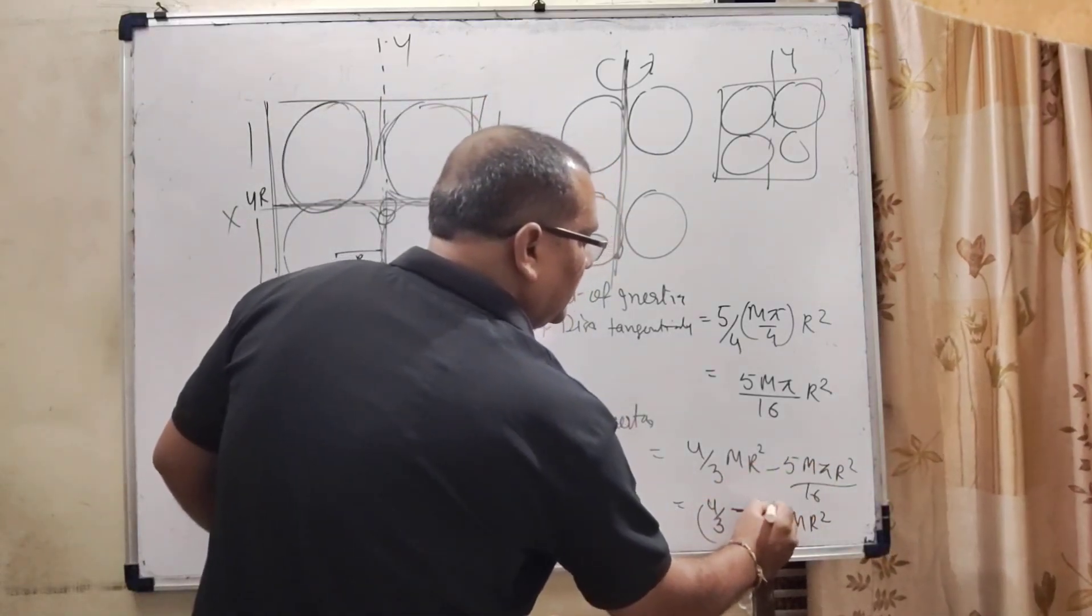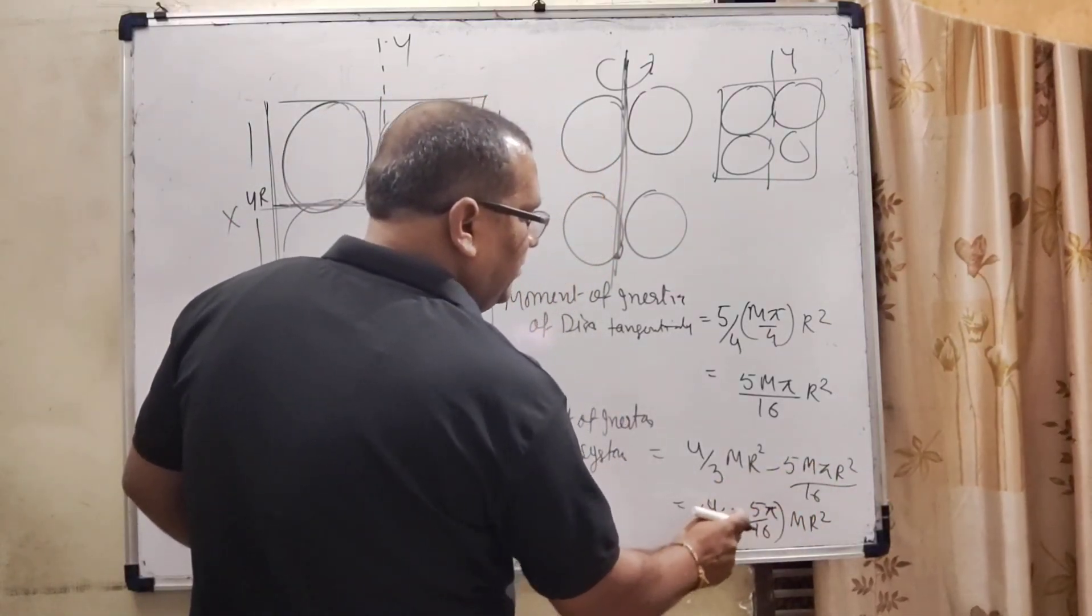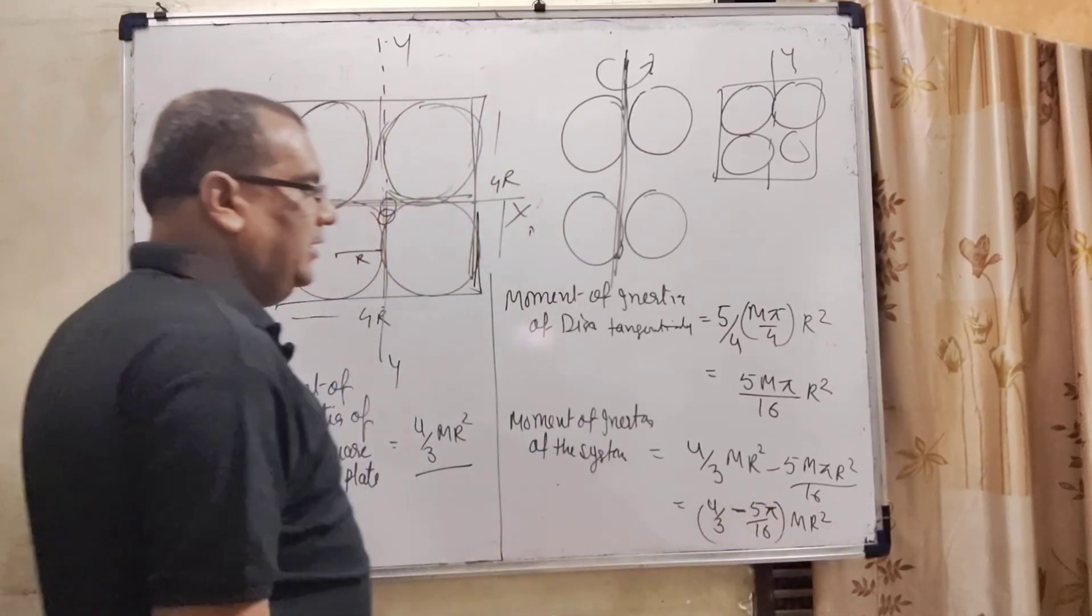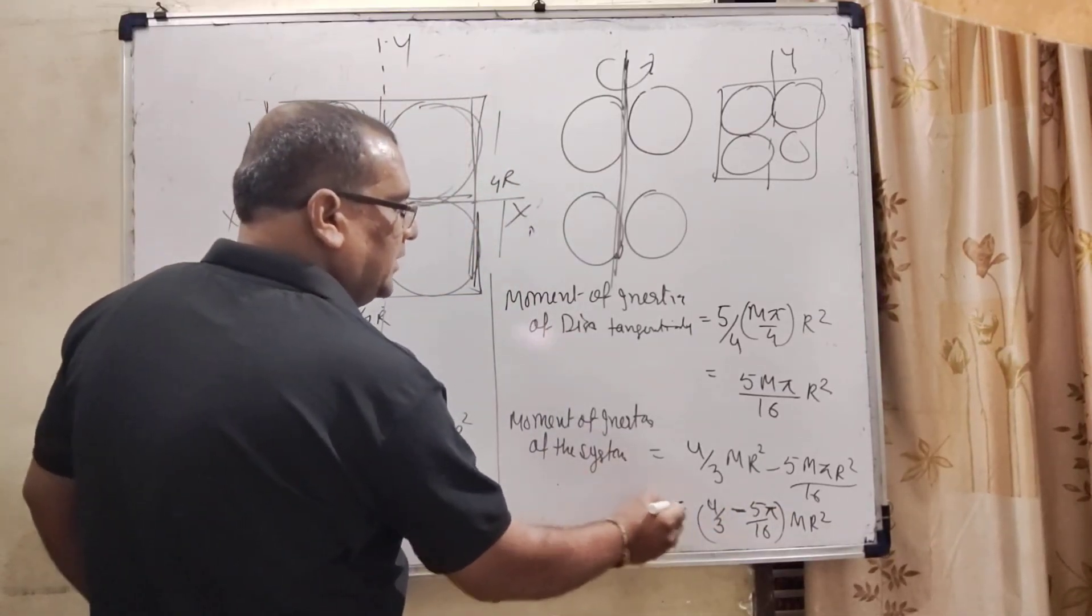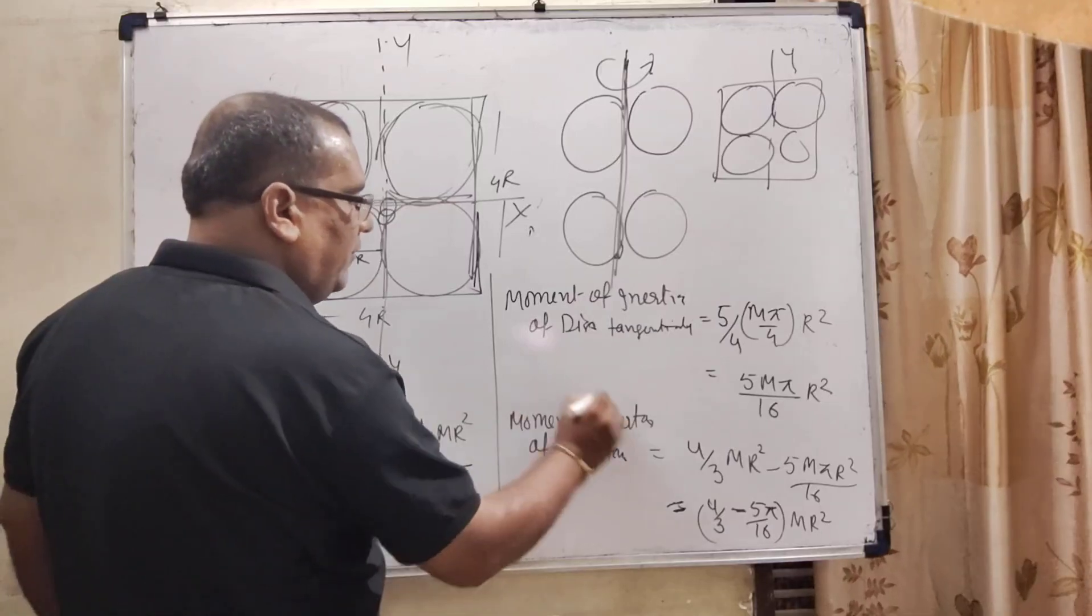4 by 3 minus 5 pi by 16, MR square taken out as common. This is 4 by 3 minus 5 pi by 16 MR square. This is moment of inertia of Y axis.